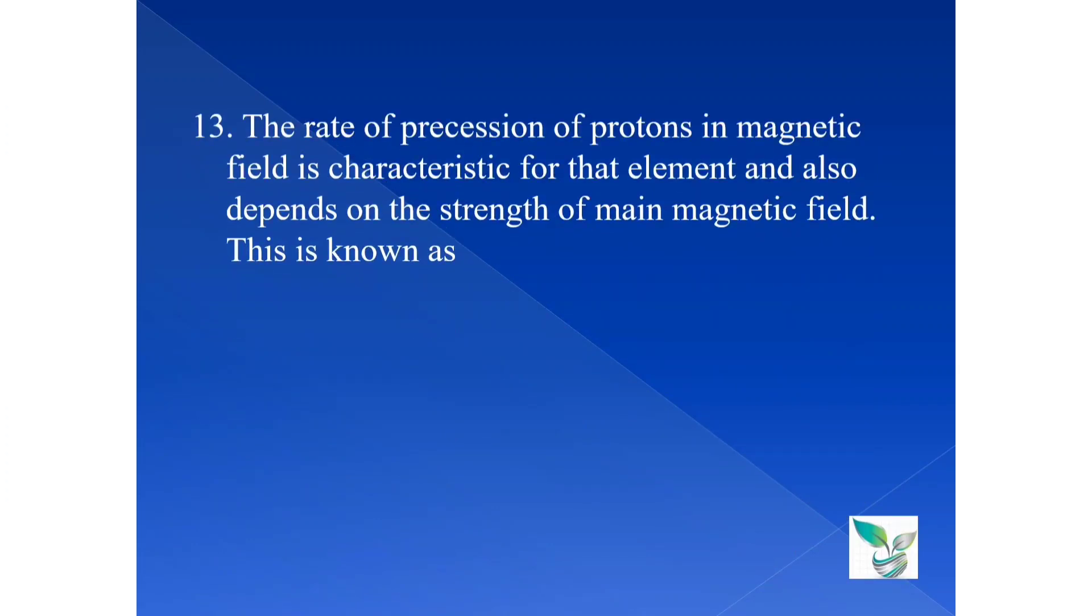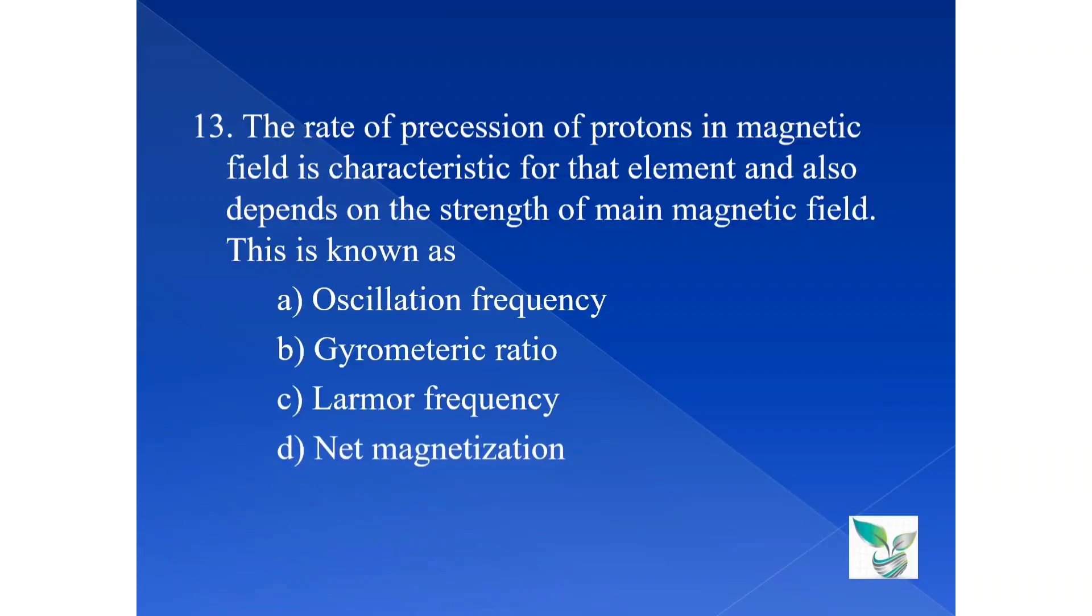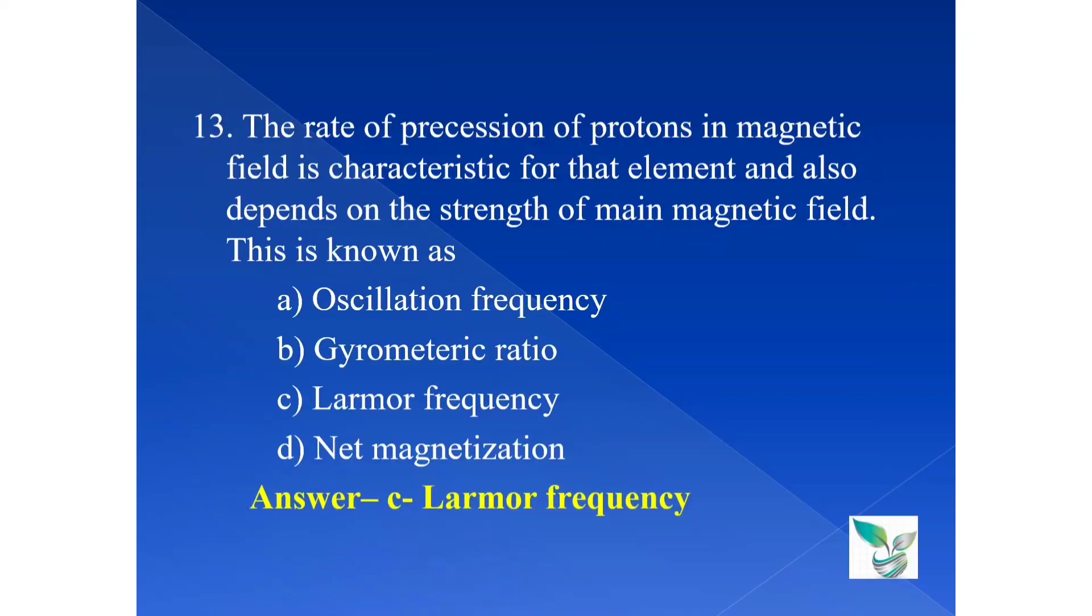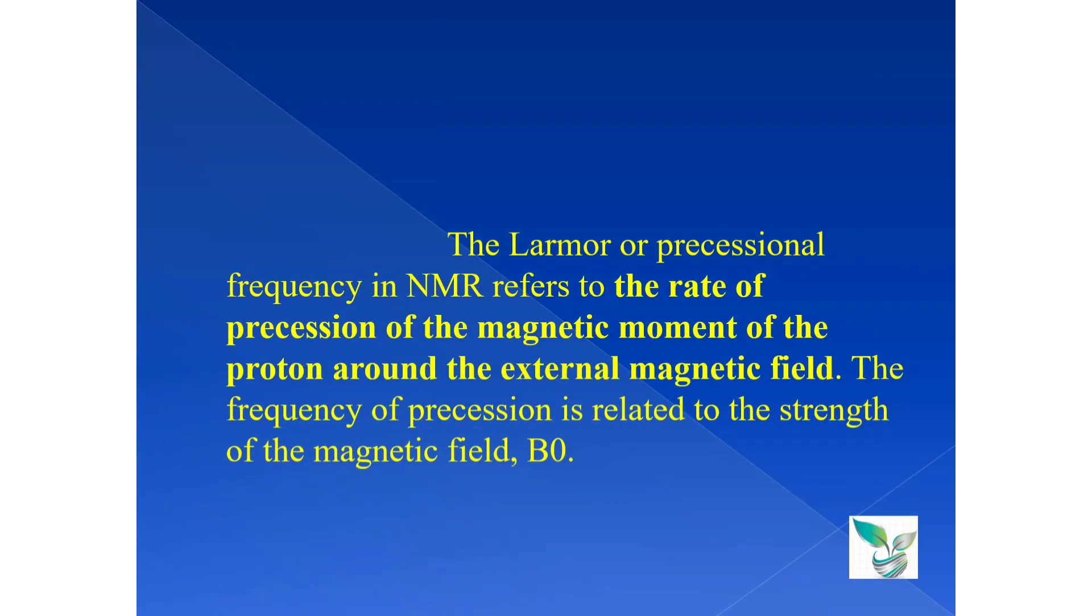Question number 13. The rate of precession of protons in magnetic field is characteristic for that element and also depends on the strength of main magnetic field. This is known as: option A oscillation frequency, option B gyromagnetic ratio, option C Larmor frequency, and option D is net magnetization. The answer is option C Larmor frequency. The Larmor or precessional frequency in NMR, nuclear magnetic resonance, refers to the rate of precession of the magnetic moment of the proton around the external magnetic field. The frequency of precession is related to the strength of the magnetic field, that is B0.